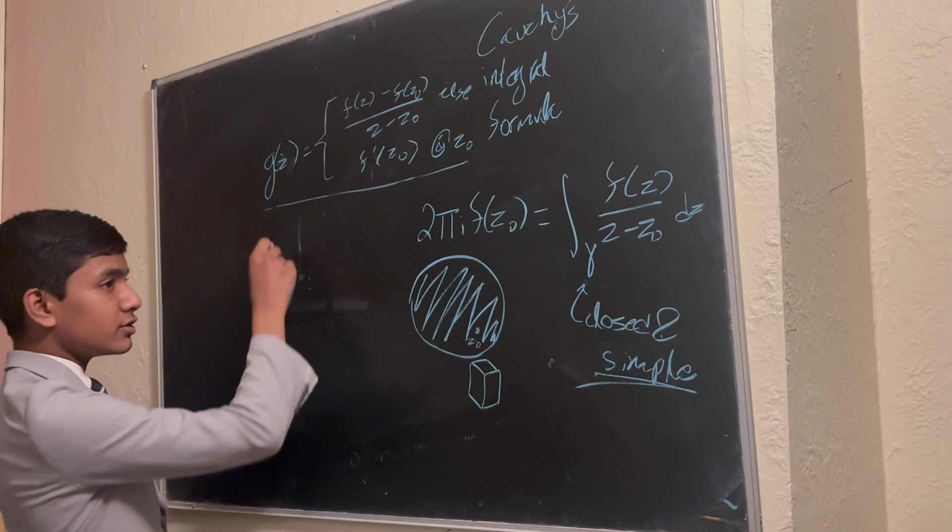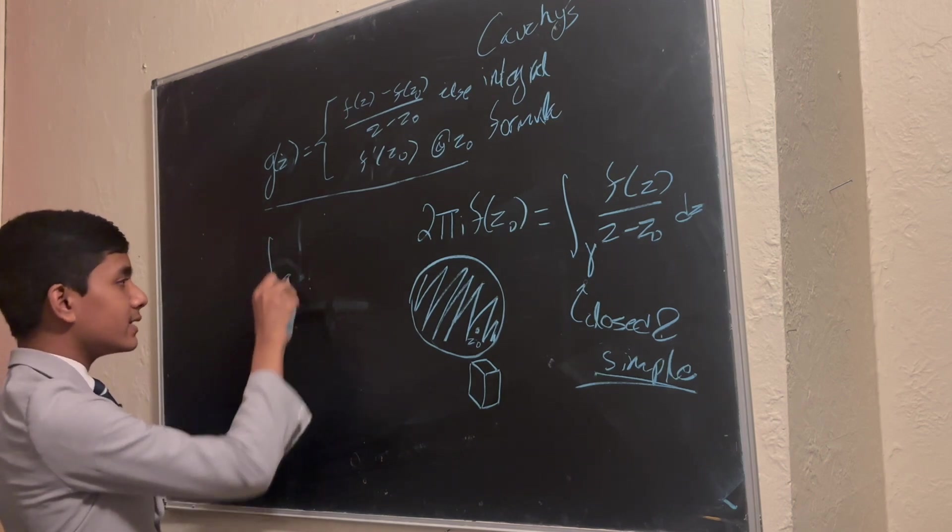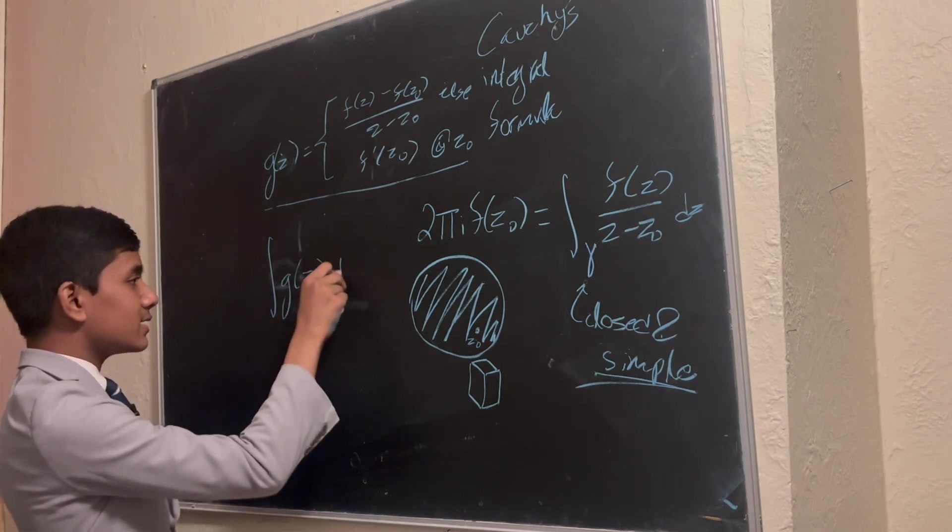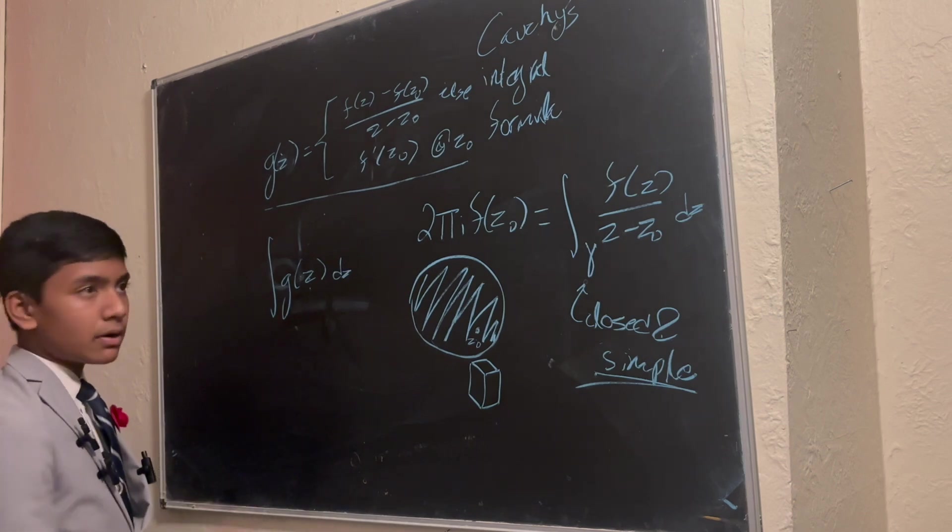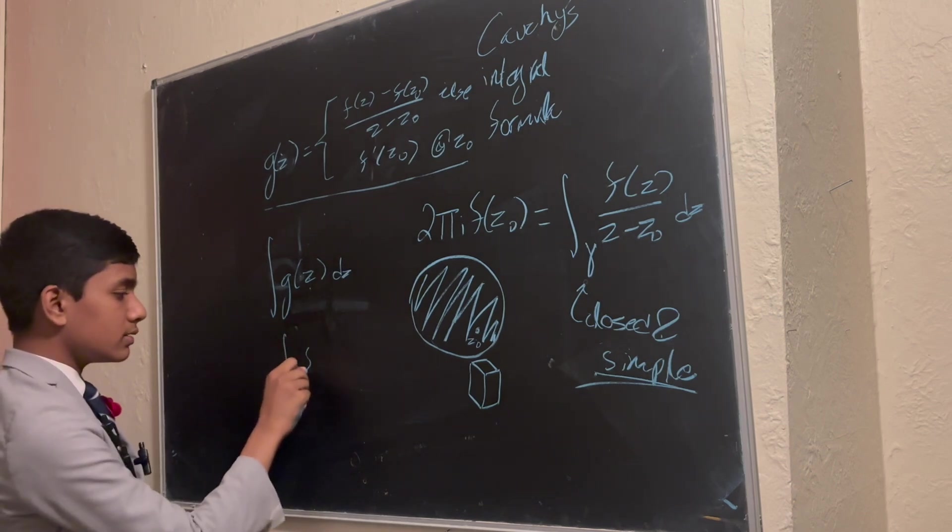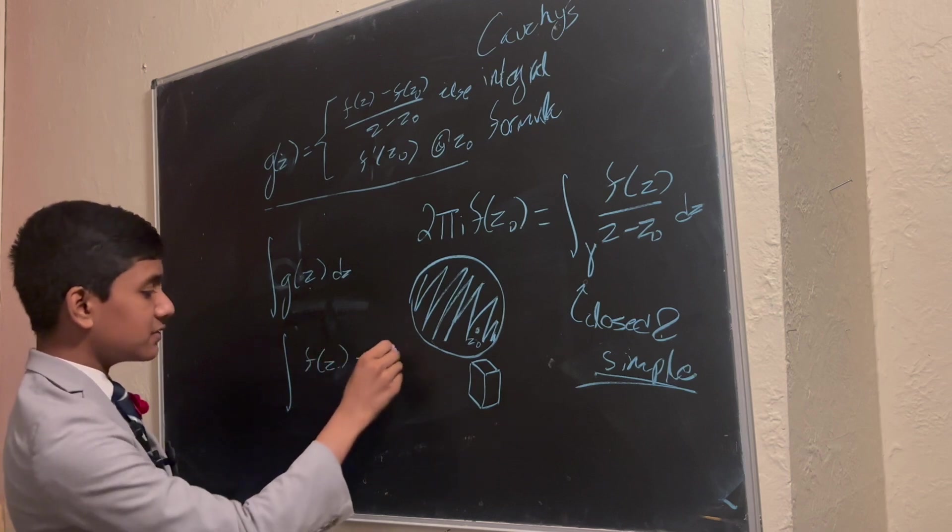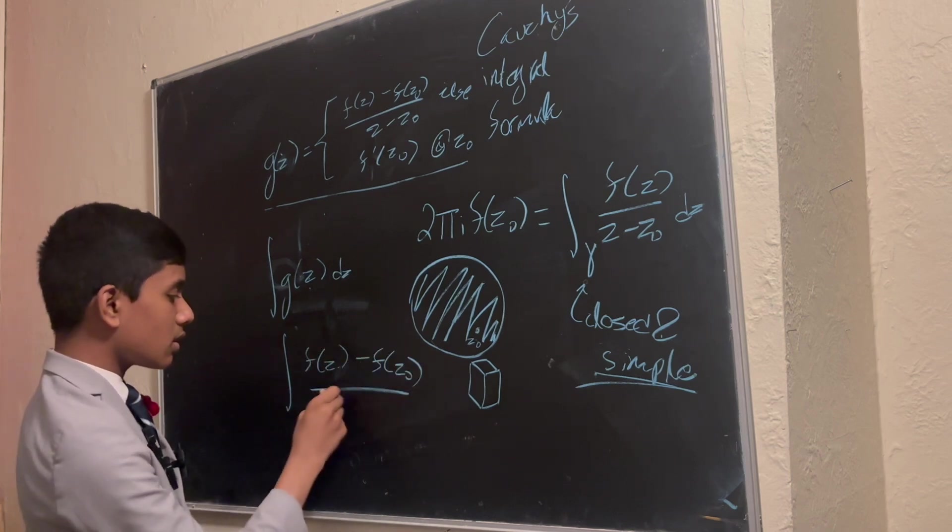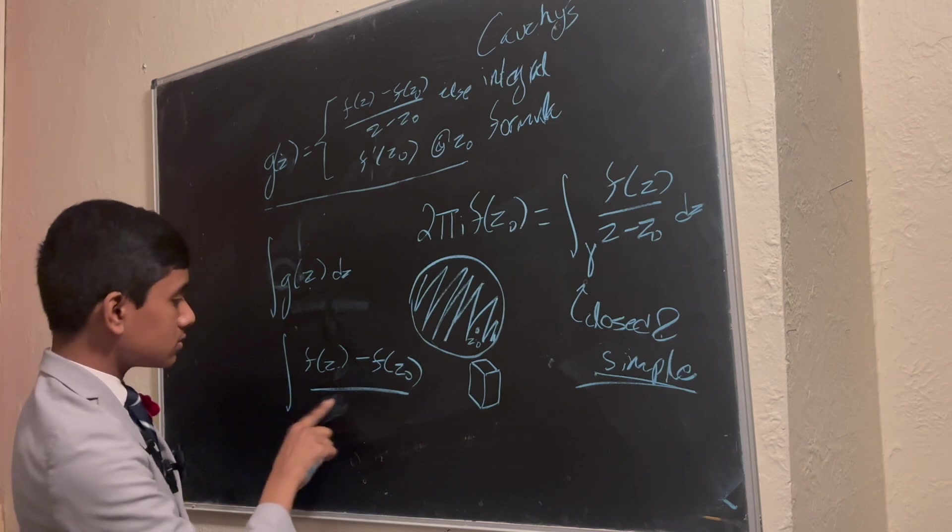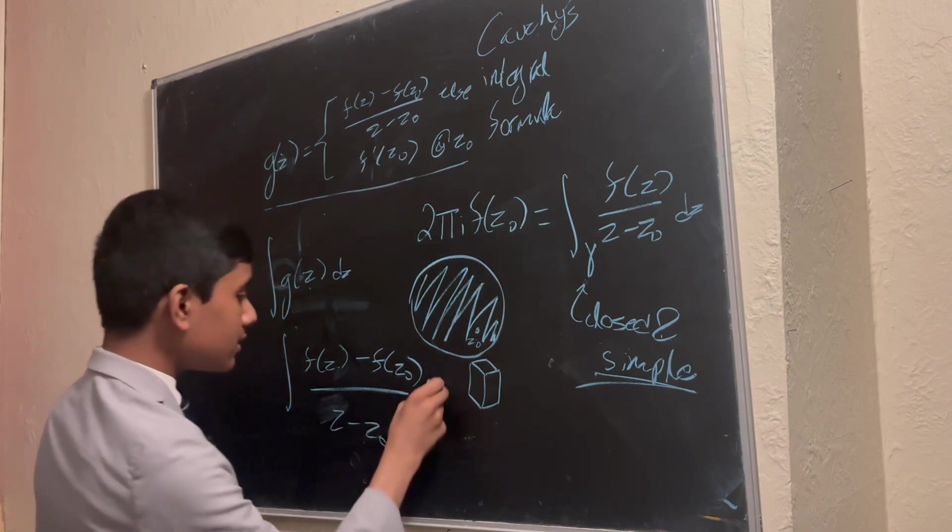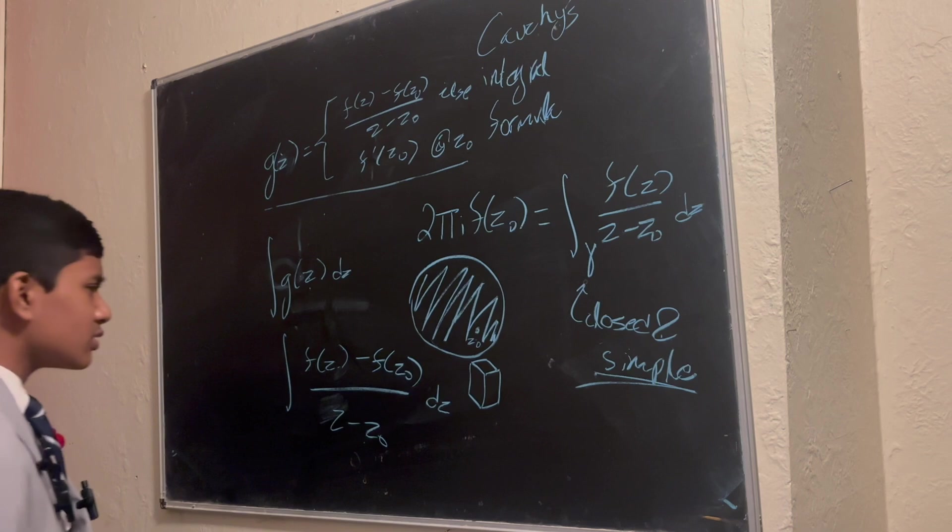Then all we have to do is try and take the integral of g of z, and two things pop out. The integral of f of z minus f of z0 over z minus z0 dz. Now, this looks messy.